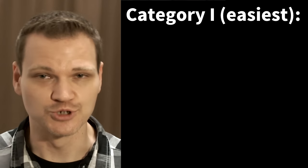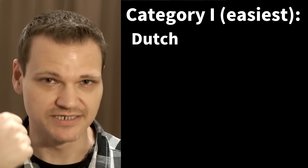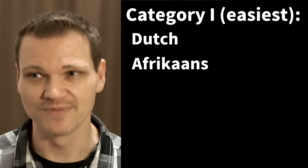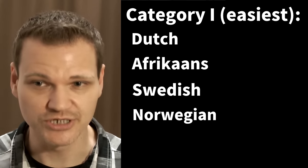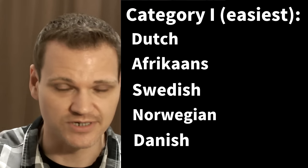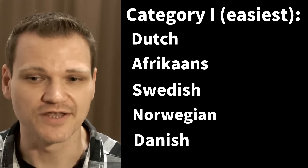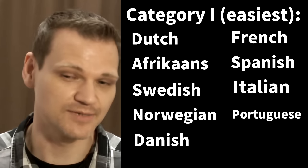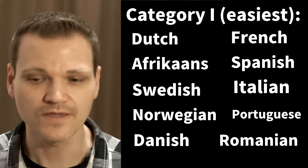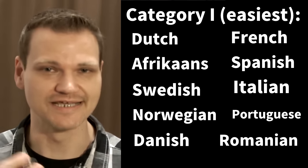So which ones are in Category 1, the easiest? They are the Germanic languages such as Dutch, Afrikaans, and the Northern Germanic languages from Scandinavia like Swedish, Norwegian, and Danish — not Finnish, that's a separate language group. And then you've got the Romance languages like French, Spanish, Italian, Portuguese, and I believe also Romanian. Those ones are the most closely related to English. The Germanic ones like Dutch and Afrikaans are probably the most closely related to English and the easiest to learn.